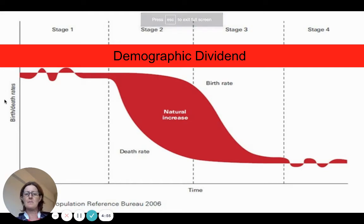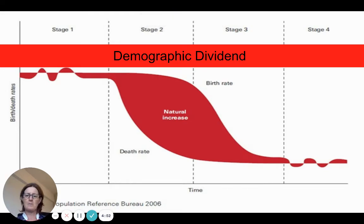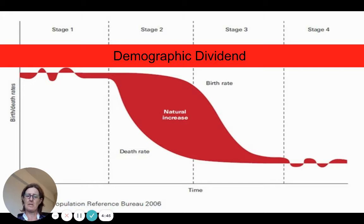We're going to look at demographic dividend. Demographic means population or people, and dividend essentially is a payout. So when we talk about this, we're trying to achieve this for a particular country at a certain stage — ideally of the demographic transition model. So we're talking about a benefit.